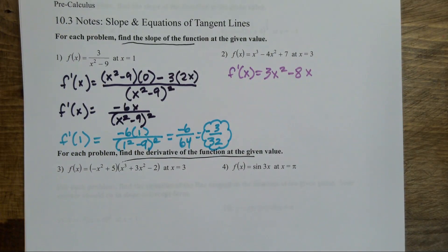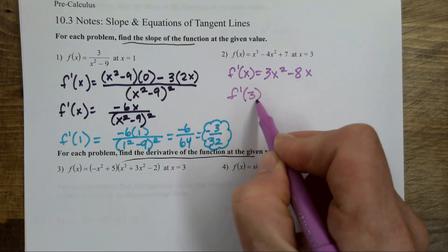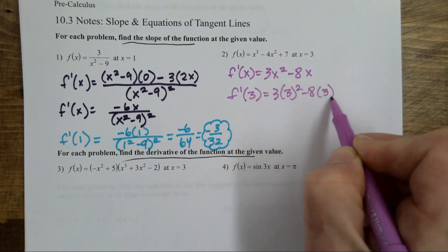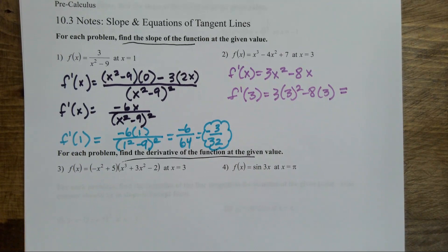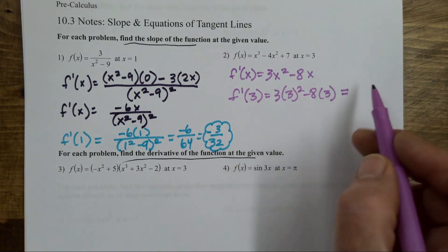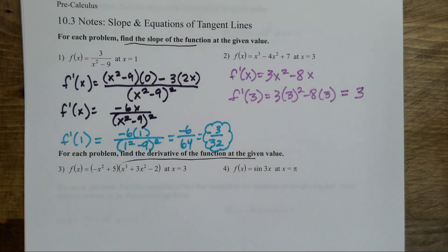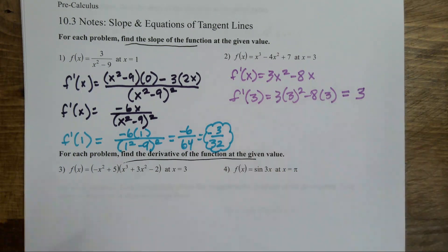No simplifying I can really do here, so I just plug in my value and get a value. I think it's three. All I'm doing is evaluating: three times three squared is 27, minus 24, gives me three.